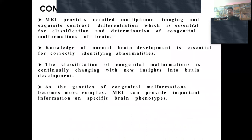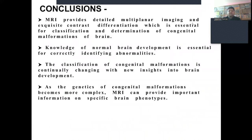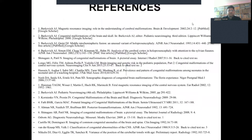In conclusion, MRI provides detailed multi-planar imaging and exquisite contrast differentiation, which is essential for classification and characterization of congenital malformations of the brain. Knowledge of normal brain development is essential for correctly identifying abnormalities. The classification of congenital malformations is continually evolving with new insights into brain development, and as the genetics of congenital malformations become better understood, MRI can provide important information on specific brain phenotypes. These are the references from which this presentation was made. Thank you.